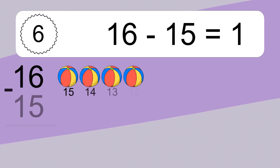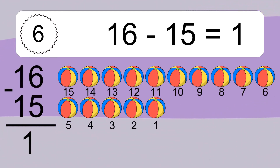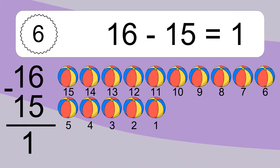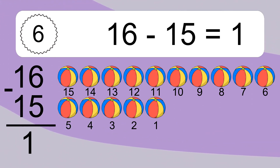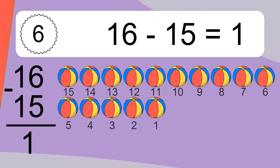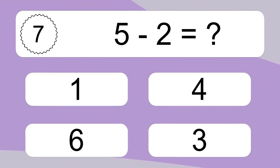16 minus 5 equals 1. Let's count it: 15, 14, 13, 12, 11, 10, 9, 8, 7, 6, 5, 4, 3, 2, 1. 16 minus 5 minus 2 equals what?